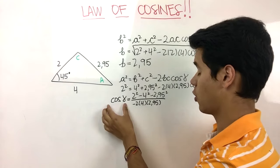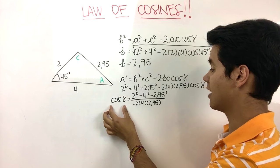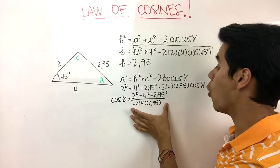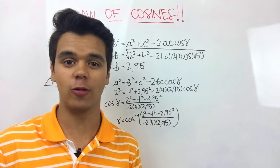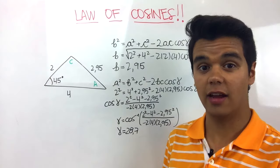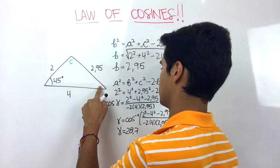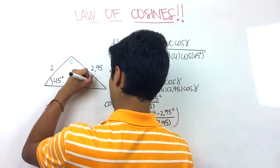If we want to get rid of this cosine, we need to take the inverse cosine of this whole thing. Using the calculator, we find out that the angle is equal to 28.7, and there's our answer. I'm gonna take this angle and write 28.7.